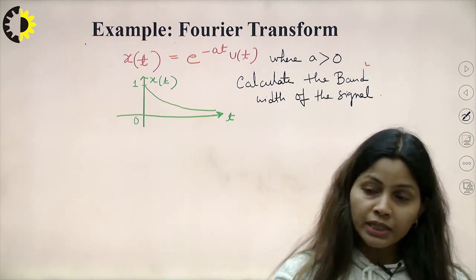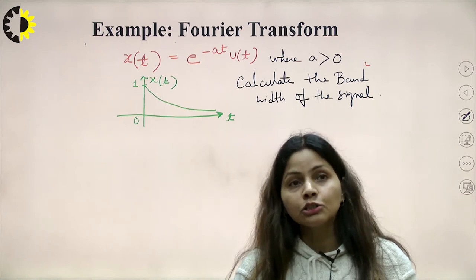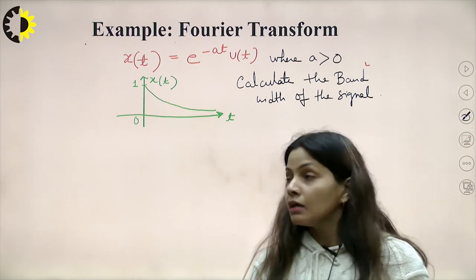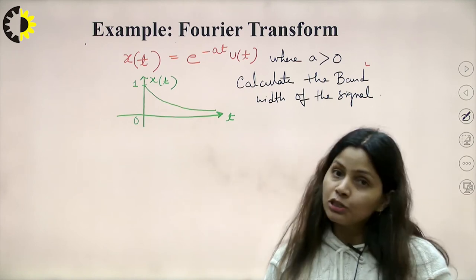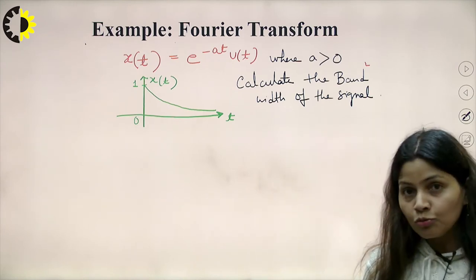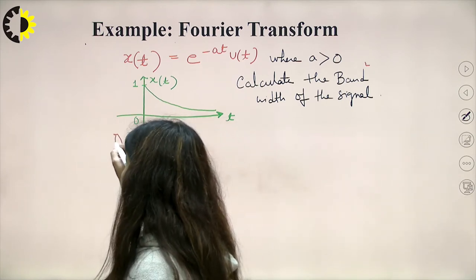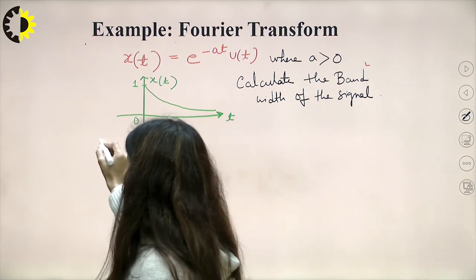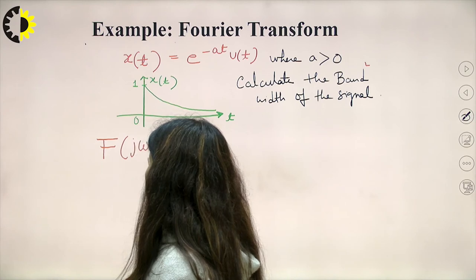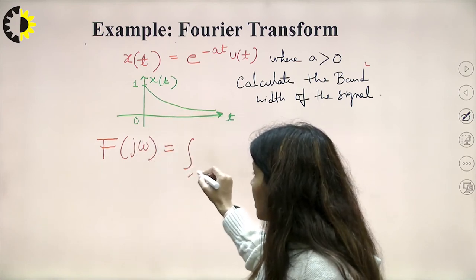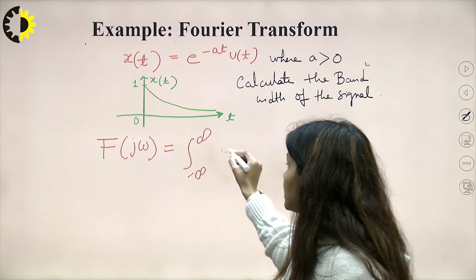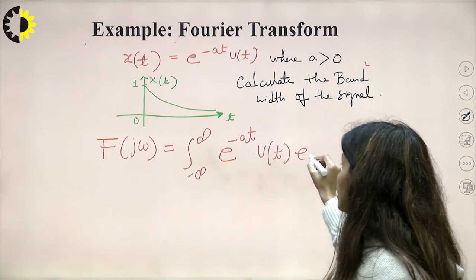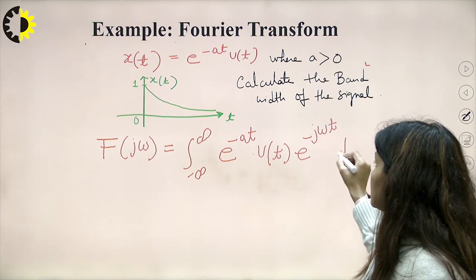The question asks to analyze the function in frequency domain — meaning we need to take the Fourier transform — and also to calculate the bandwidth of the signal. For the bandwidth calculation, we must first know the Fourier transform. We apply the same formula: F(jω) = integral from minus infinity to plus infinity of f(t) · e^(−jωt) dt, where f(t) = e^(−at) · u(t).